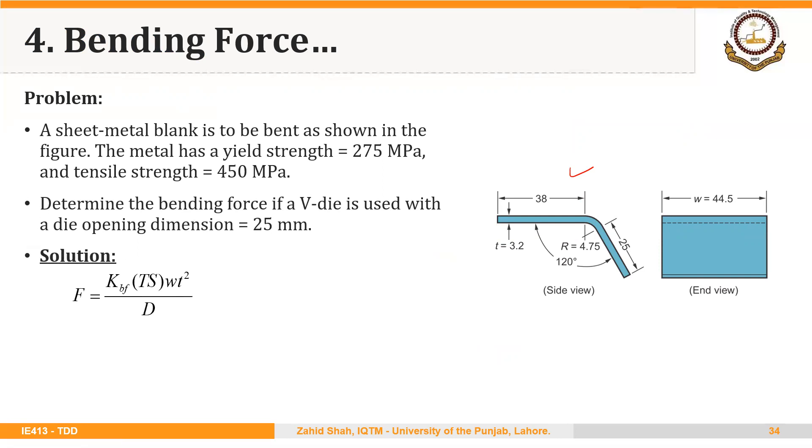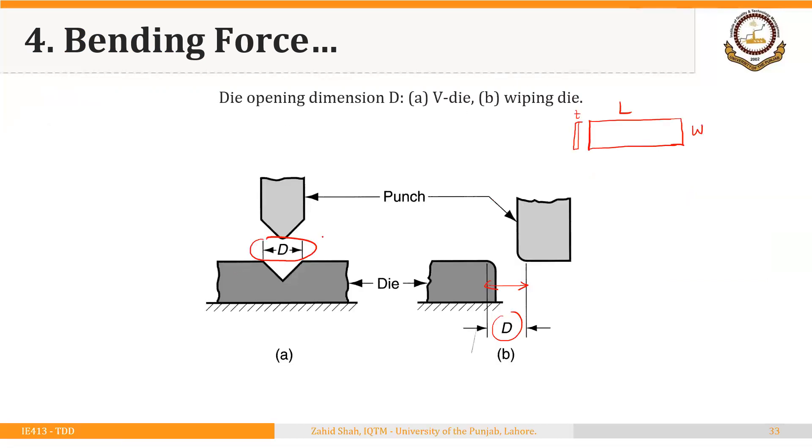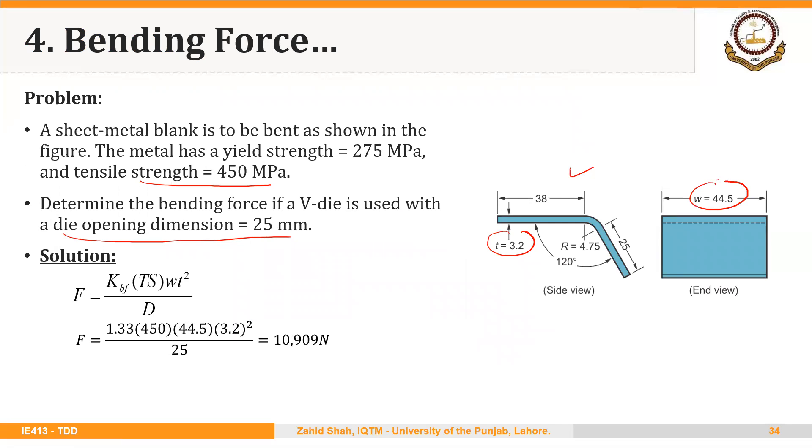So we will use this formula. We know the width, we know the thickness as well, tensile strength is given, and the die opening size is 25 mm. So we are discussing V-bending. So this size is 25 mm. We will put values in the formula and we will get a force of 10,909 newtons.